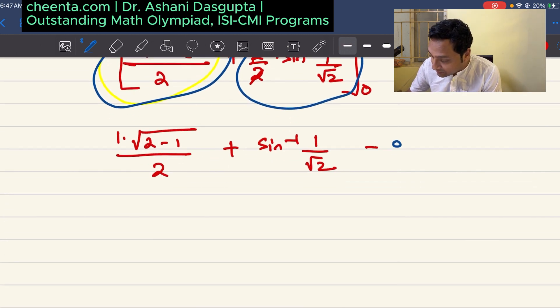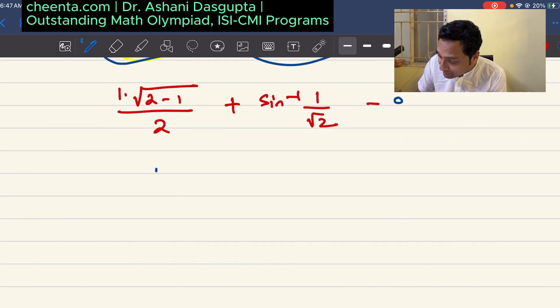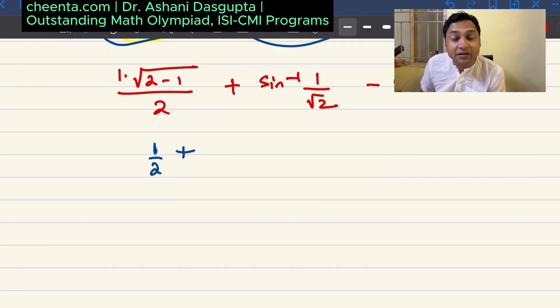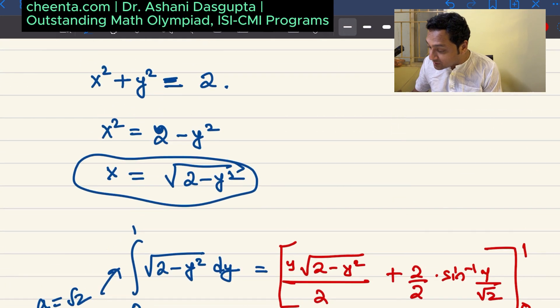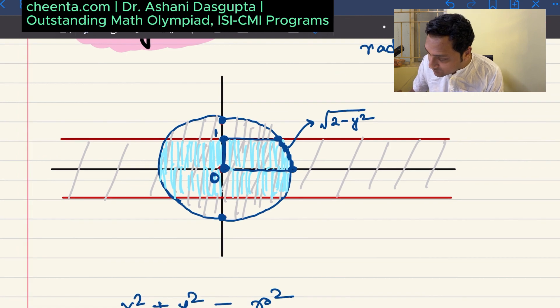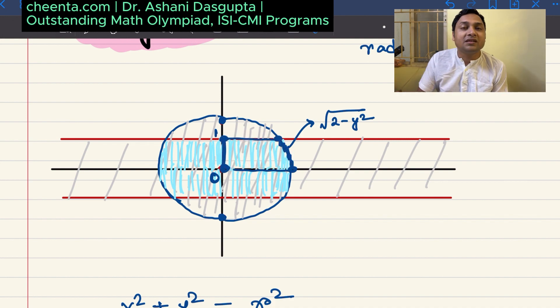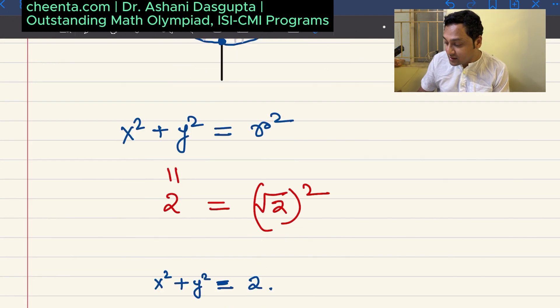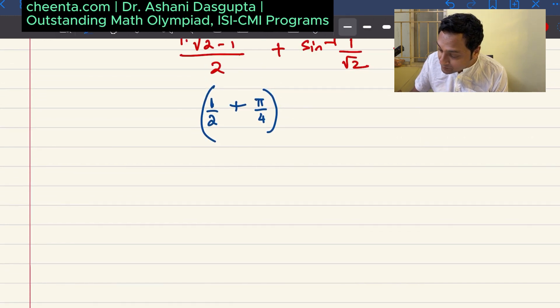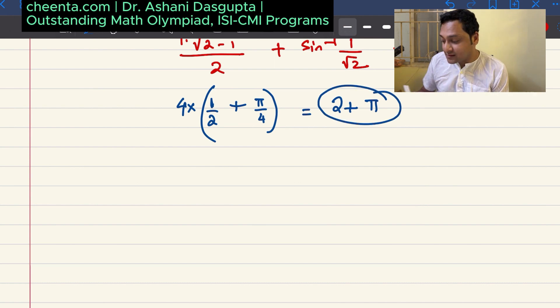So now what do we have? We have half plus sin inverse 1 by root 2. Sin of pi by 4 is 1 by root 2. So this is pi by 4. So you found it. Now you can just multiply it by 4 because what we just found is the area of this region. And by symmetry, if we multiply by 4, I'll get this entire blue region. So let's multiply by 4. 4 times this. So this is 2 plus pi. That's the answer.